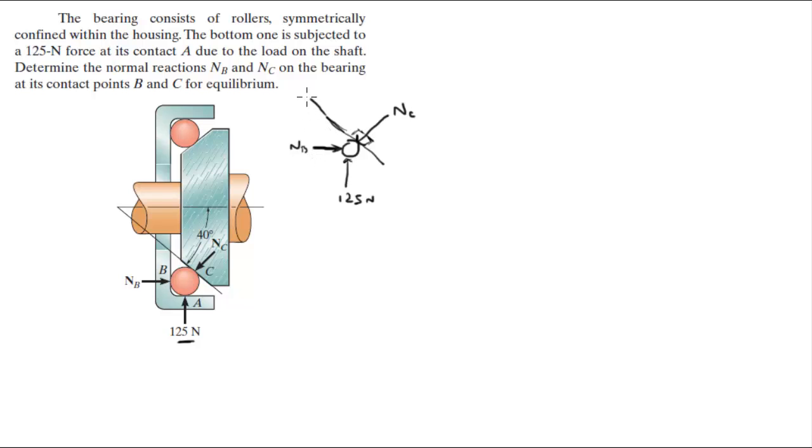Also, they tell you that this angle is 40 degrees. So if this angle is 40 degrees and this is a 90 degree angle, this angle is 50 degrees because the sum of the three angles inside a triangle is 180. So we can figure out this one's 50 right off the bat.